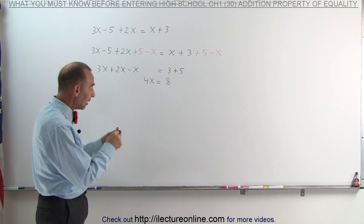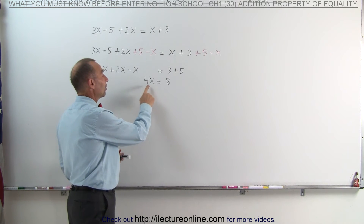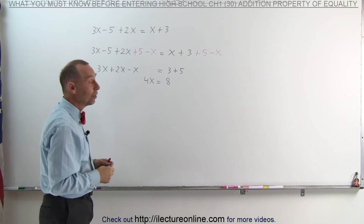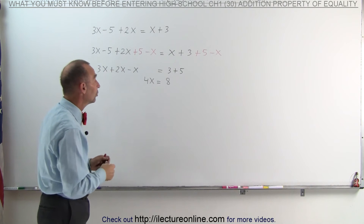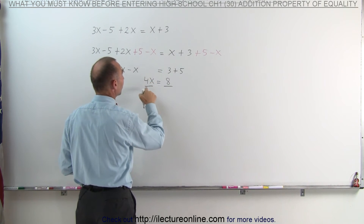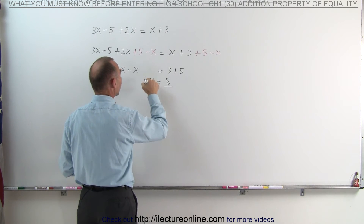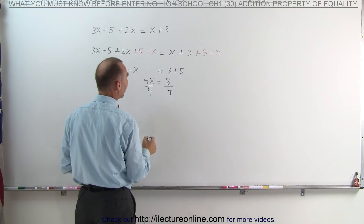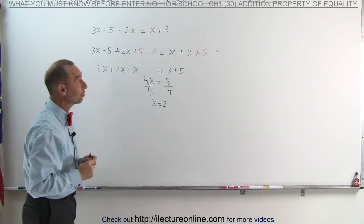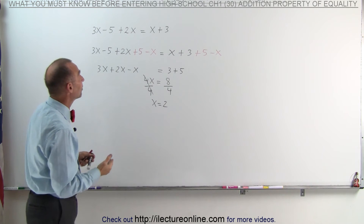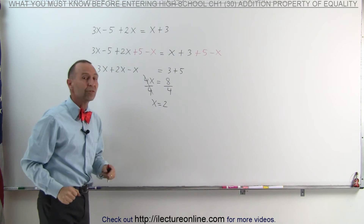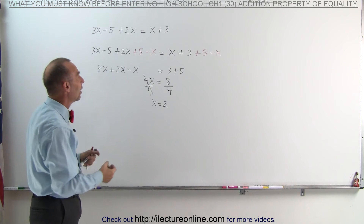Now it's easier to see what X should be so that the left side equals the right side. You can readily see that if X is 2, then 4 times 2 equals 8, which means X equals 2. Another way to find X is to divide both sides of the equation by the coefficient — the number in front of X, the number that's multiplied by X. So I divide the left side by 4 and I divide the right side by 4. The fours disappear and X equals 2. That's ultimately what we're trying to accomplish.